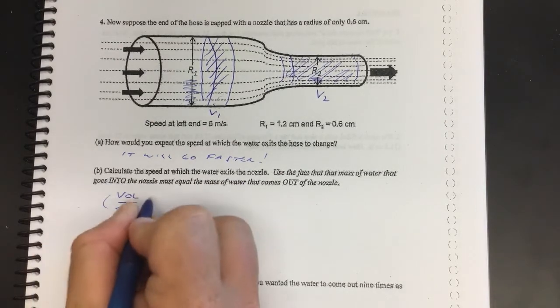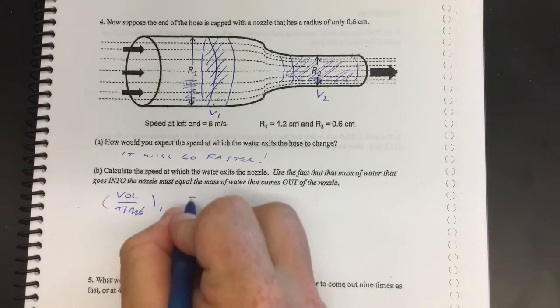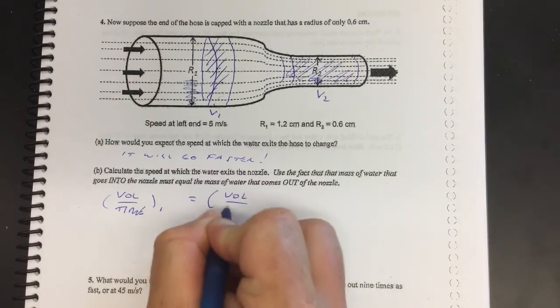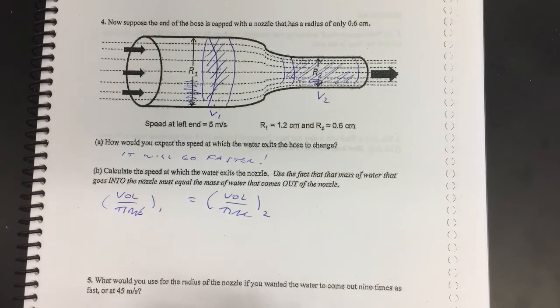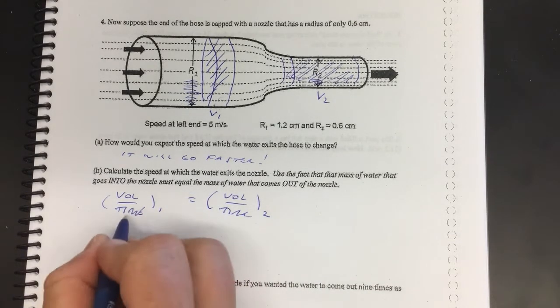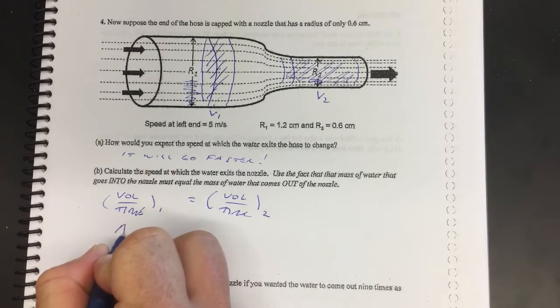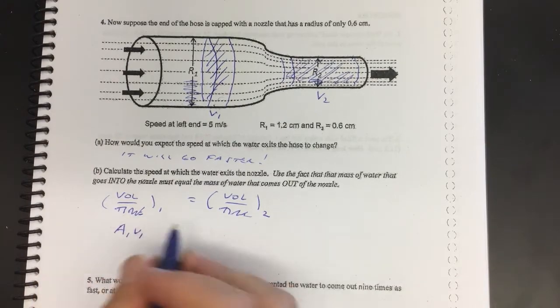What we saw in the previous case, previous example, is that the way you find a volume per time is you take the area times the velocity.